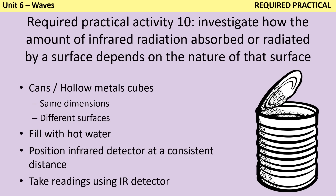The next required practical is about investigating how the amount of infrared radiation absorbed or radiated by a surface depends on the nature of that surface — for example whether it's shiny or matt. You need a number of identical cans or hollow metal cubes with the same dimensions but different surfaces. Fill the cans with hot water from the same kettle so they start at the same temperature, then use a ruler to position an infrared detector at a consistent distance from each can. You can also take the temperature of the water as a surrogate measure since a can radiating more infrared will see its temperature drop faster.